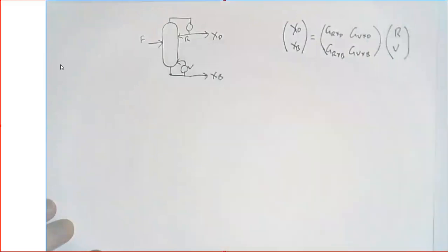But the question is: why can we do that? Why can we just add them up like that? If you think about a real system, isn't it going to be more complicated than that? Why can we use such a simple rule as adding the response to one input to the response to another input? Why does that give the output? I thought that was an interesting question to think about.